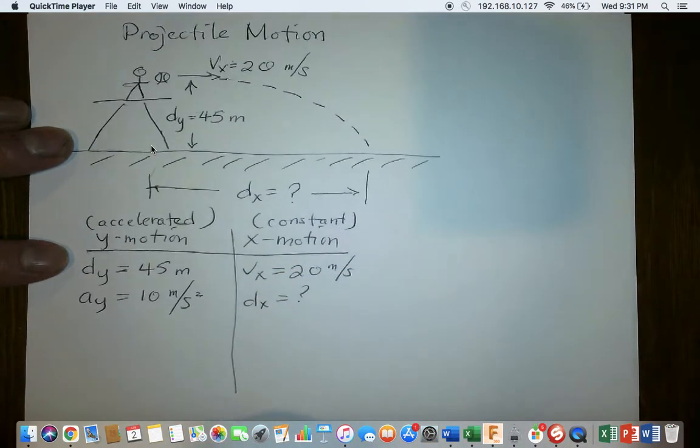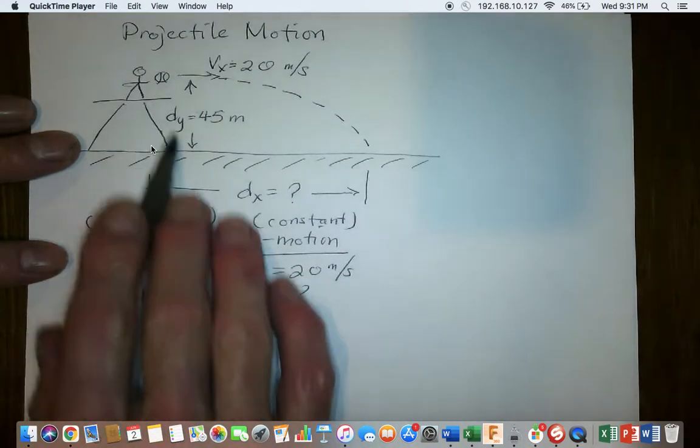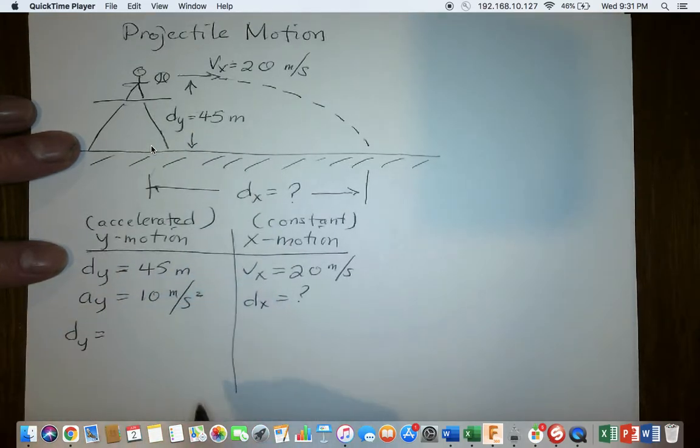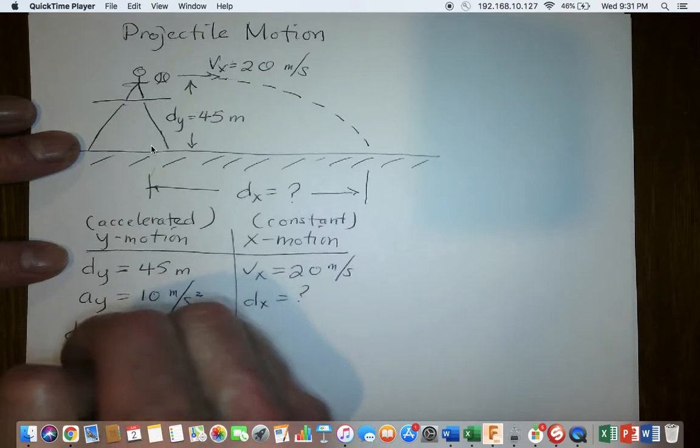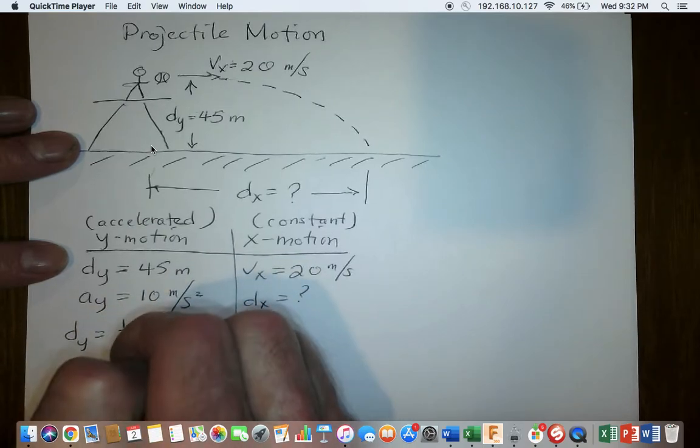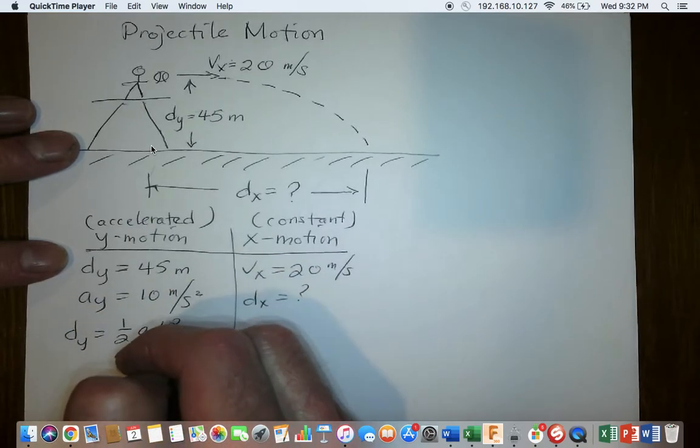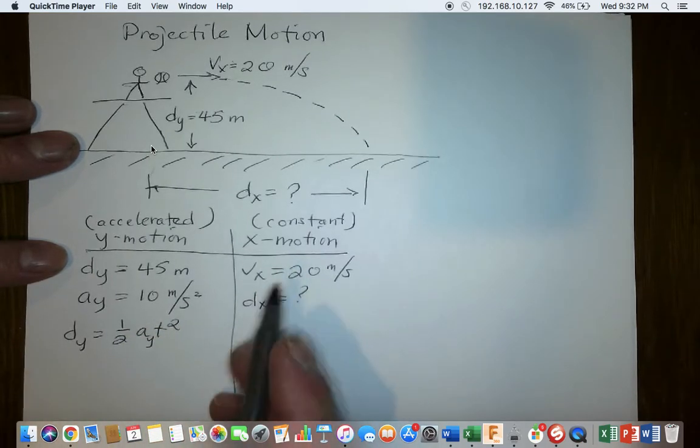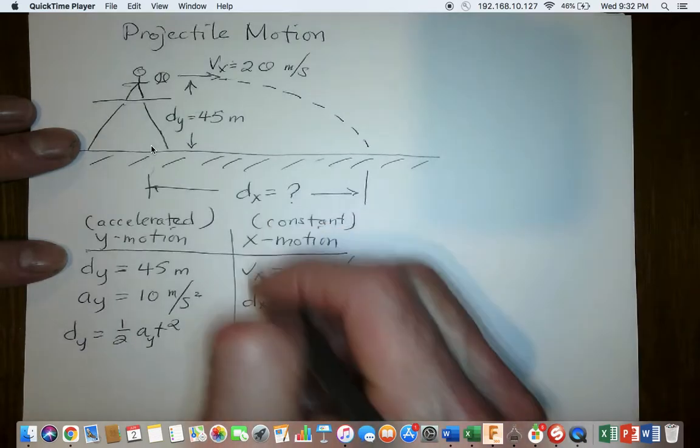There are equations that we know. Since we have been given the height, I'm going to use a formula for acceleration in the Y direction. Distance is equal to one-half AT squared. This is again the acceleration in the Y direction. With constant motion, we can use an average velocity formula.